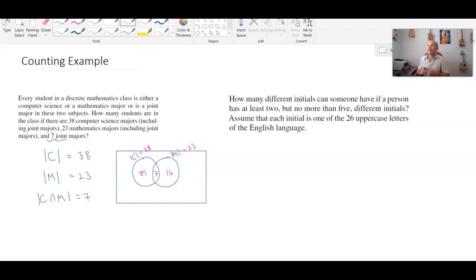So we want to know how many students are in the class, assuming this makes up the entire universe. Well we could have really taken 31 plus 7 plus 16, and that's going to be 31 plus 7 plus 16, which is 38 plus 16 is 48... 54 total students.